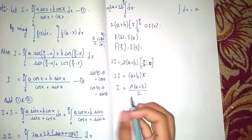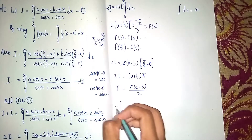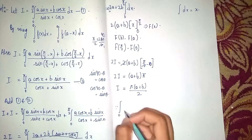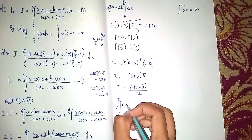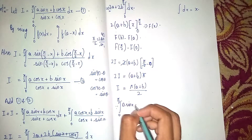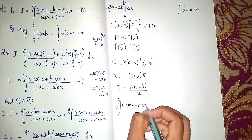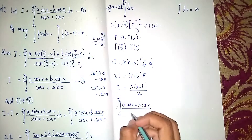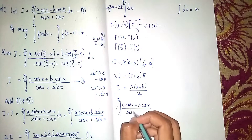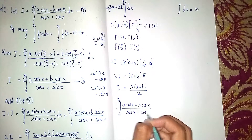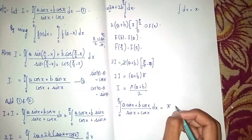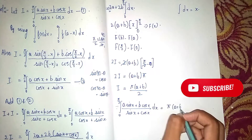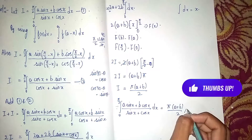Therefore, the integral from 0 to π/2 of (a·sin x + b·cos x)/(sin x + cos x) dx equals π(a + b)/2. This is our answer. Thanks for watching.